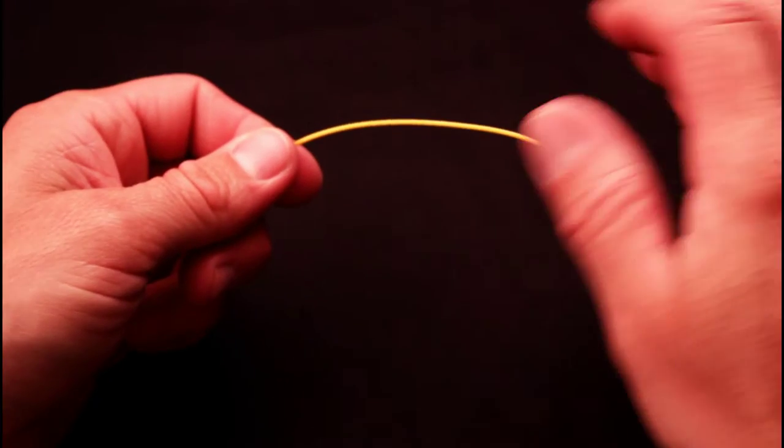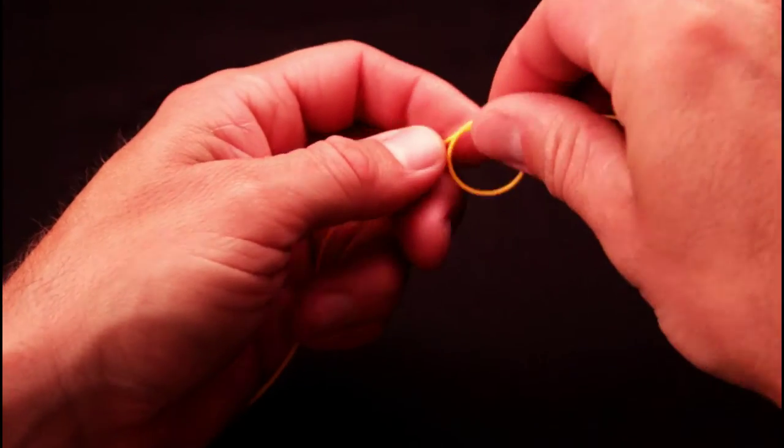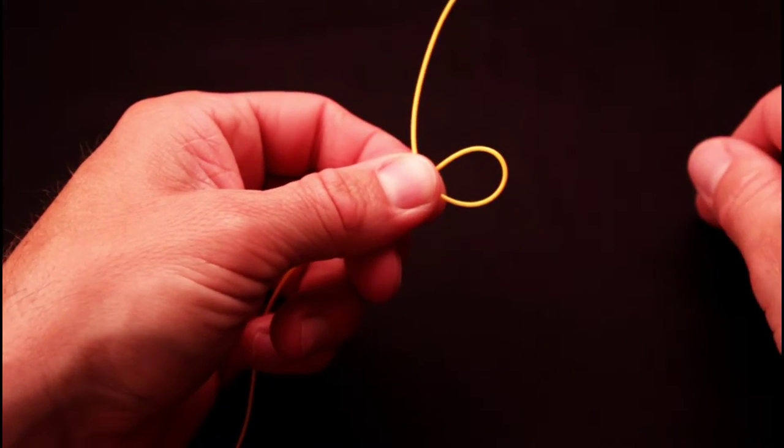Start the perfection loop with 6 to 8 inches of line. Make a loop and leave plenty of tag end to work with.